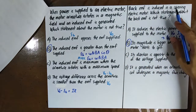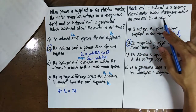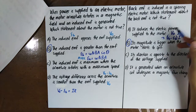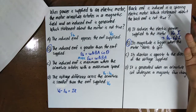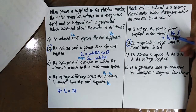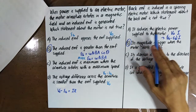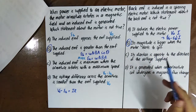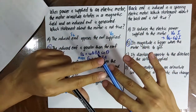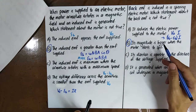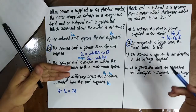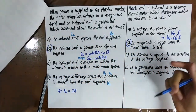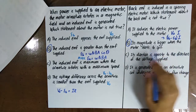MCQ: Which statement about back EMF is not true? 'It reduces the electric power supply to the motor' — True: without back EMF, power is V₀·I; with back EMF, it is (V₀ − EB)·I. 'The back EMF has a bigger value when the motor starts to spin' — False: when the motor starts, it spins slowly, so the back EMF magnitude is smaller, not bigger.